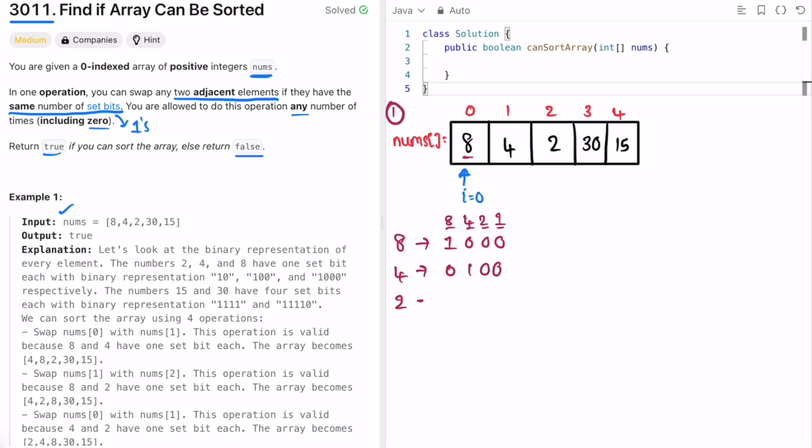2 can be written as, let's take 16 here, 11110. So add all of the set bits, it will add to 30, and 15 can be written as 01111.